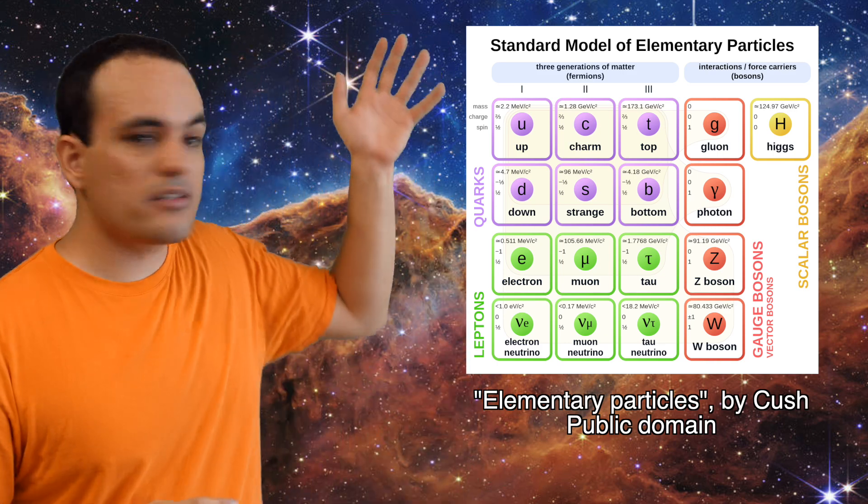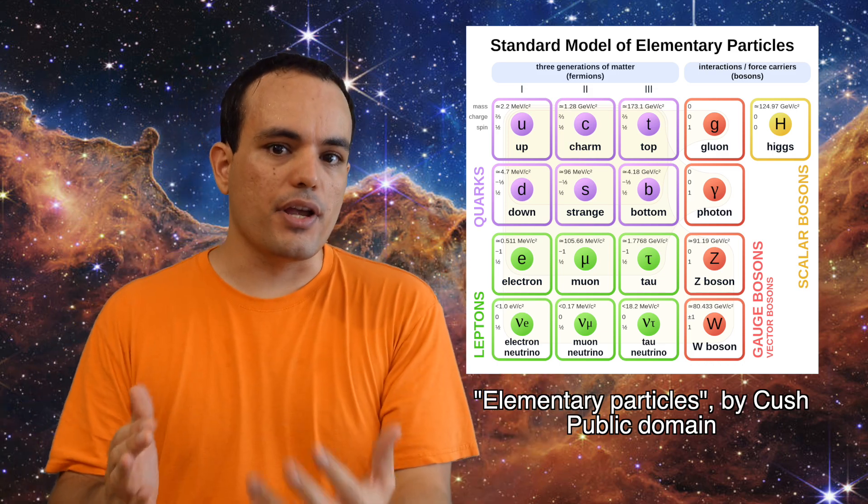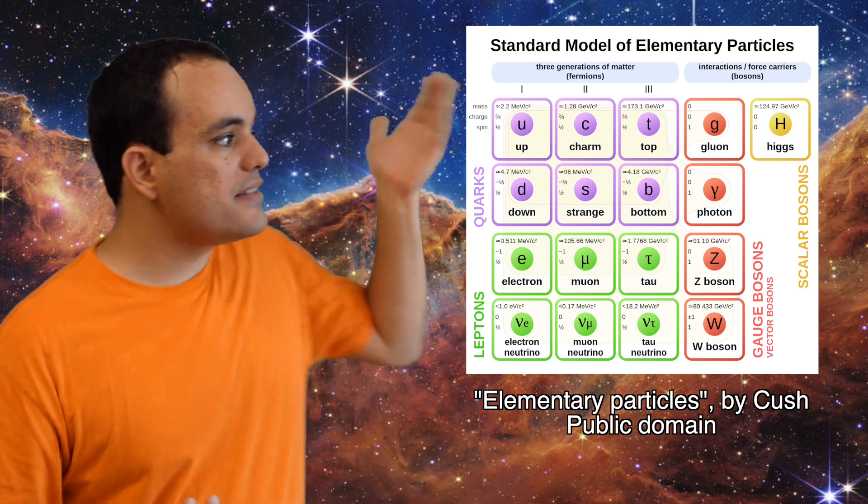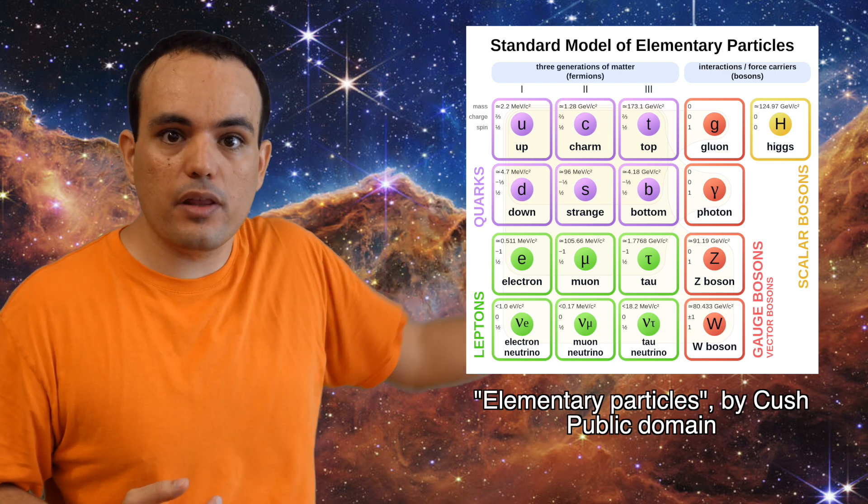like their mass, spin, and electric charge. But the problem is that it tells you nothing about the relationships between these particles. For example, looking at this diagram, you wouldn't know that all of these particles can interact with the W bosons.